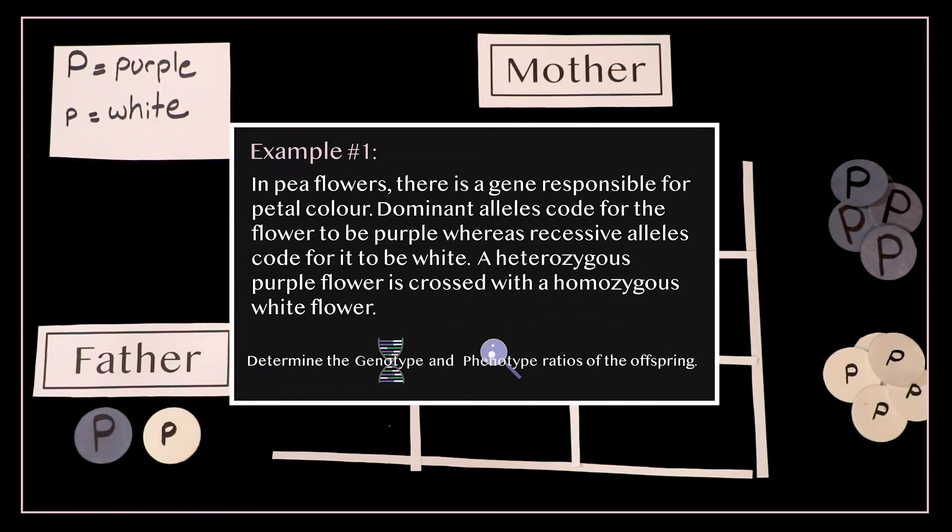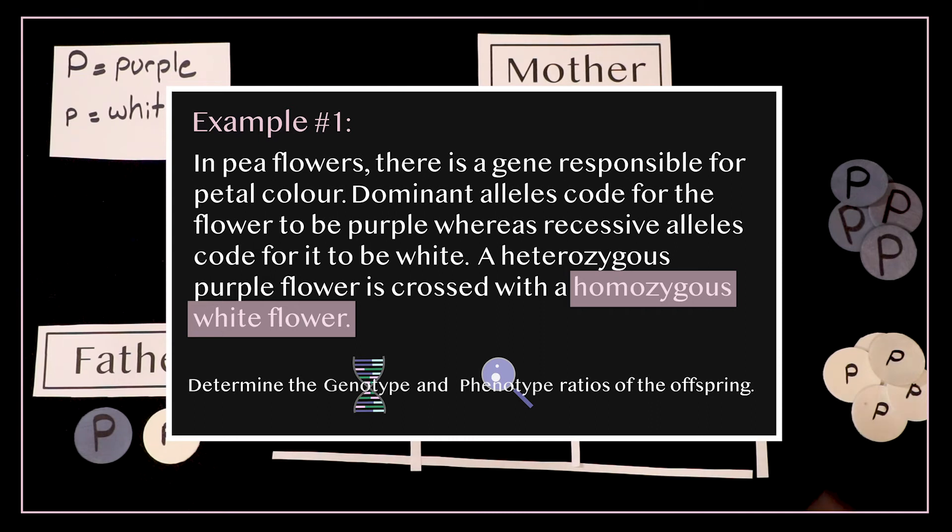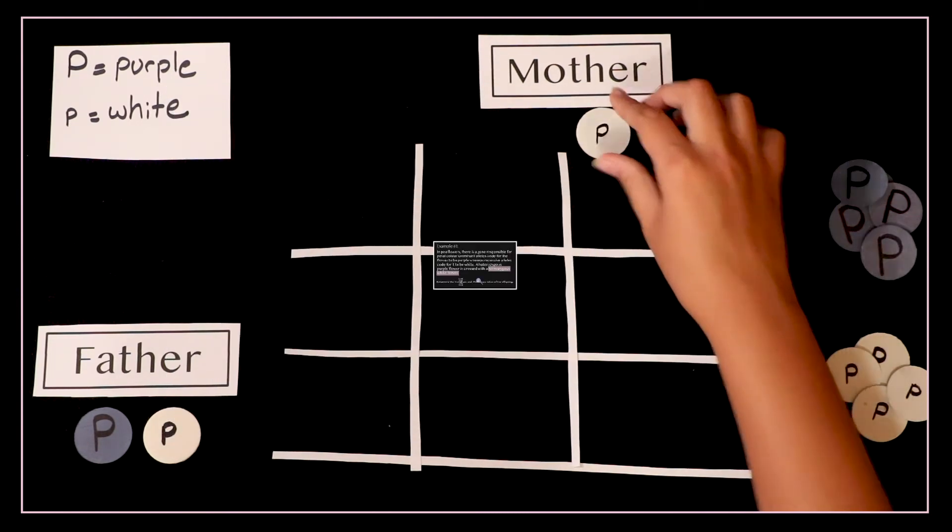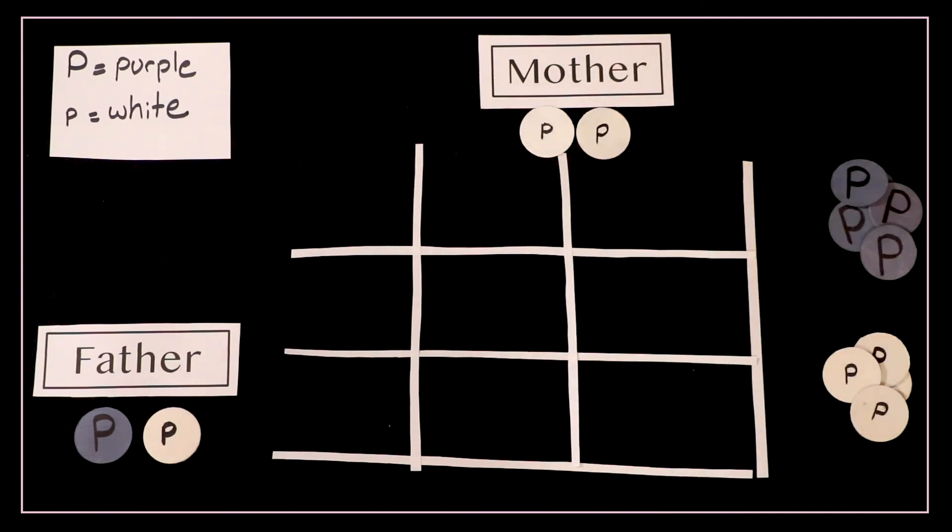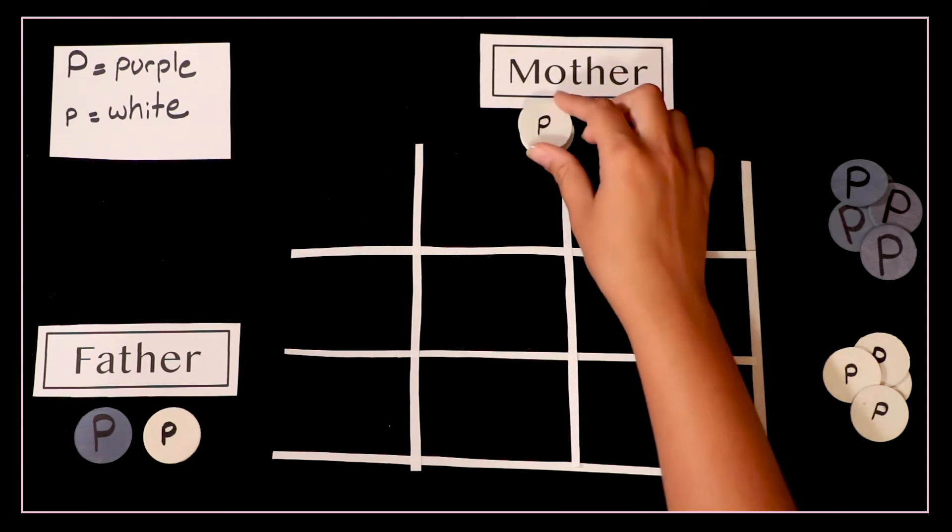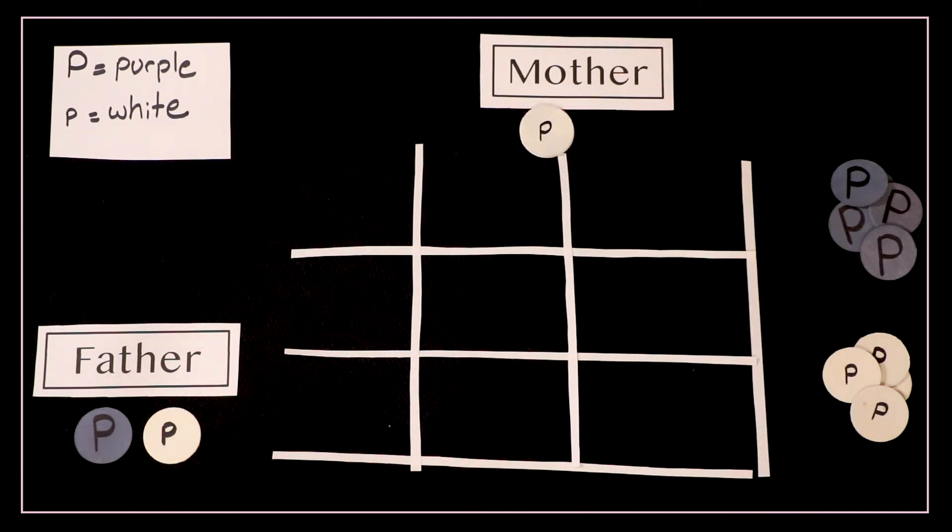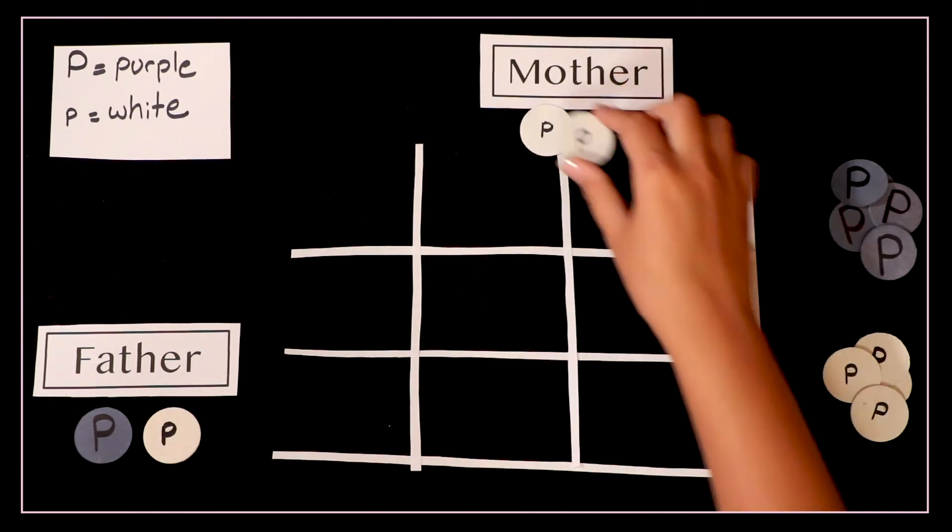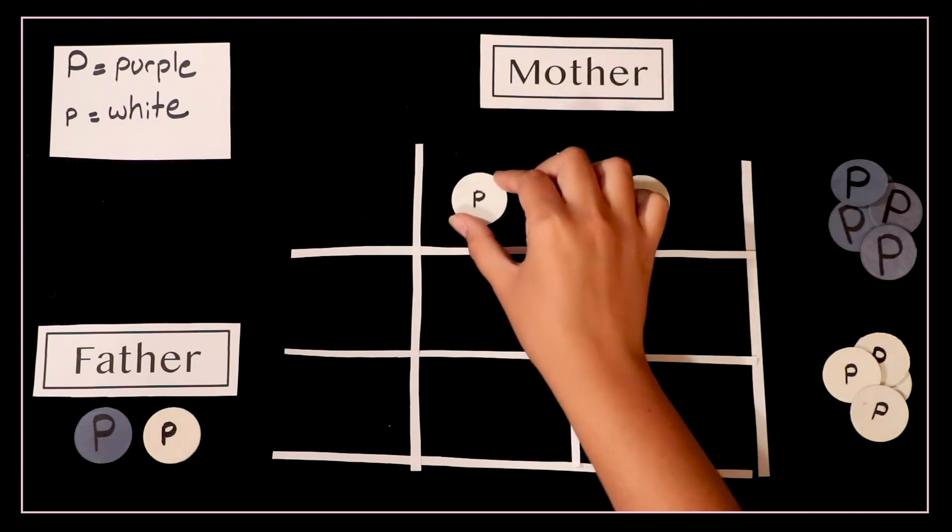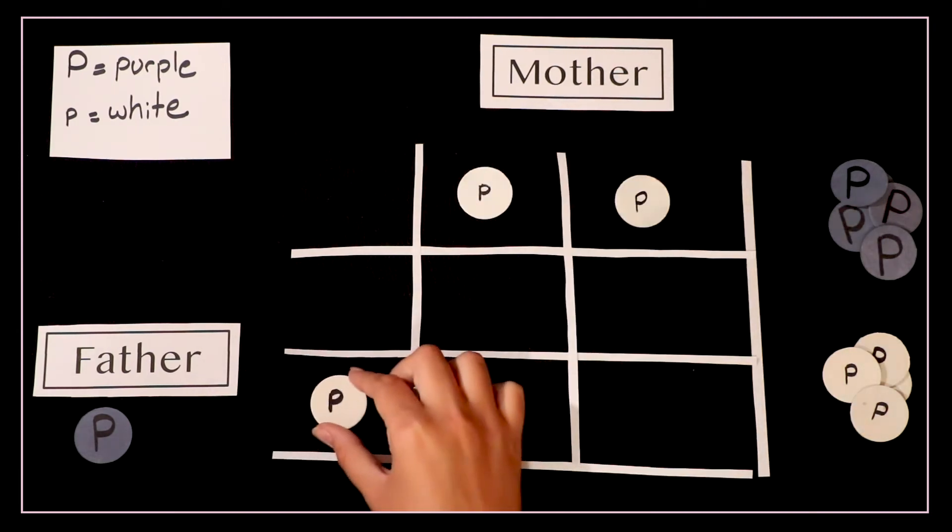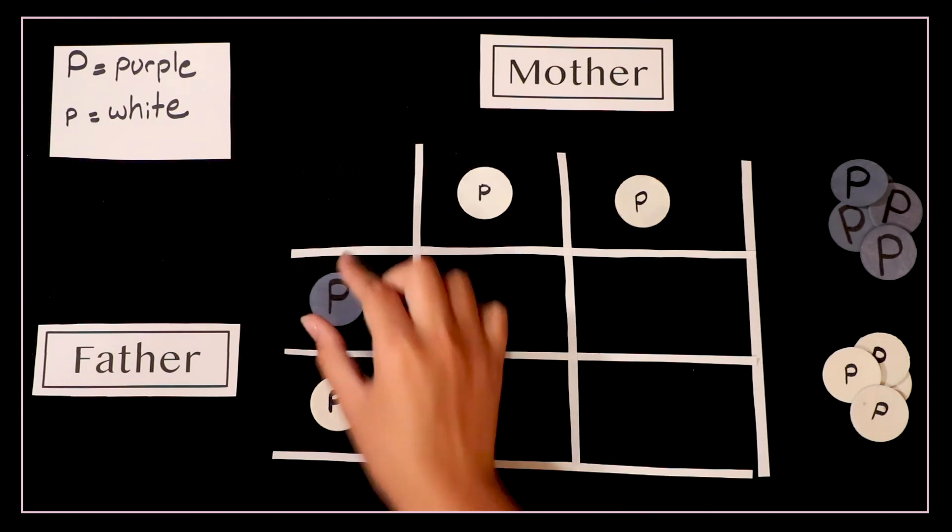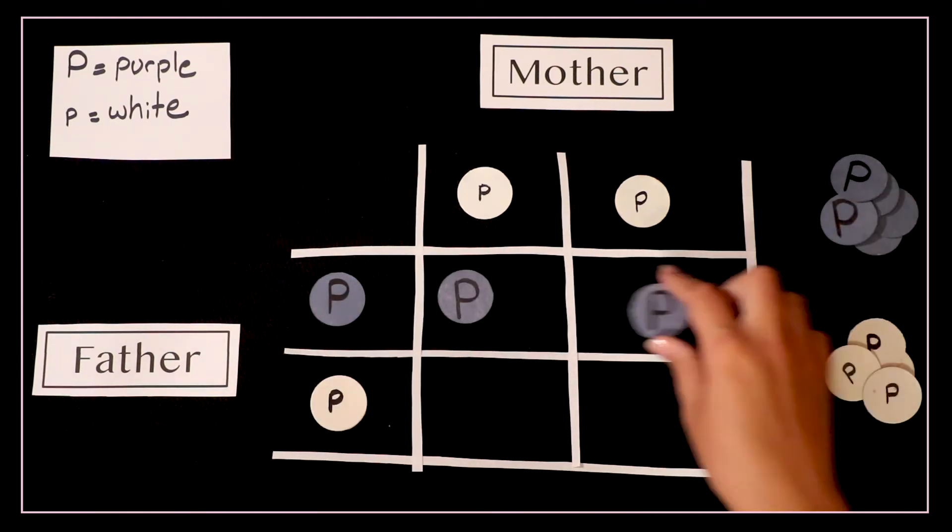The next parent is described as homozygous white. Homo means same which is how we know that there are two white alleles. Quick phenotype check and we're good to go. Each of these alleles gets placed in the outer boxes as the possible allele to get passed on to the offspring. Then you simply fill out the chart like so.